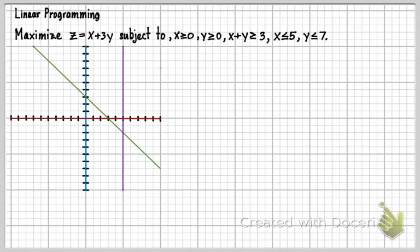And then y equals 7 is going to be a horizontal line at y equals 7. So there's the last line, y equals 7.